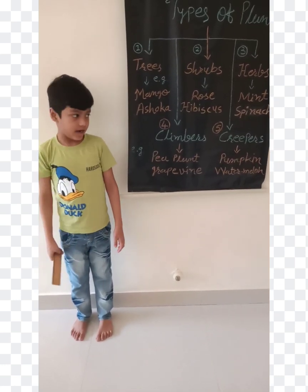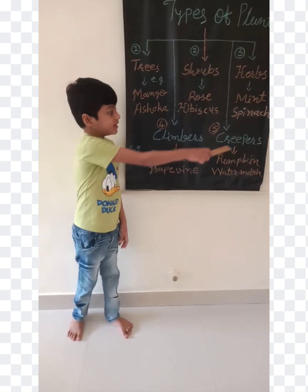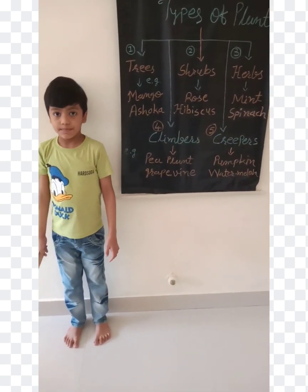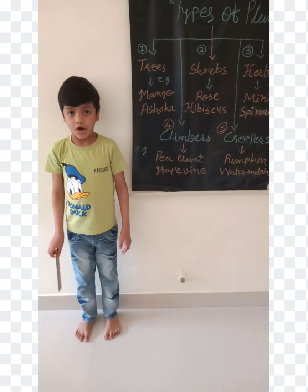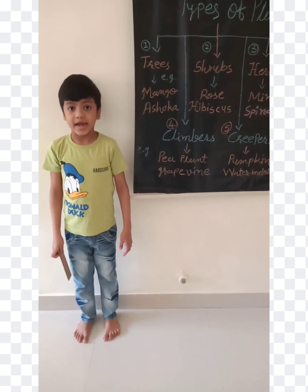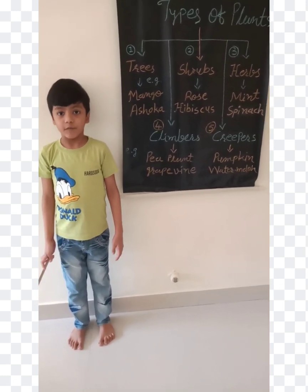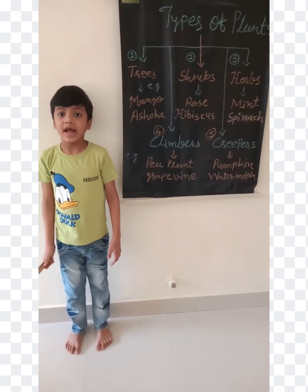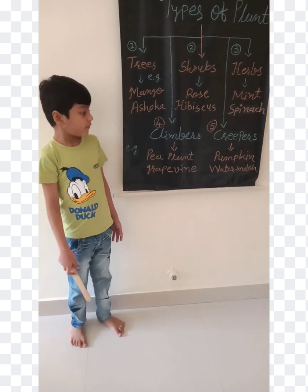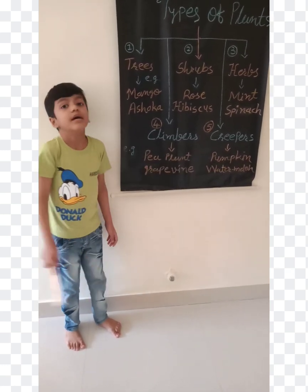The fifth type is creepers. Creepers grow along the ground. They cannot climb because their fruits are heavy. For example: pumpkin, watermelon, and muskmelon.